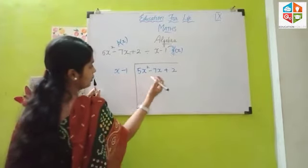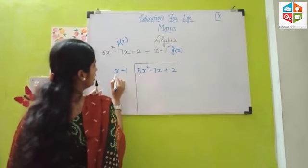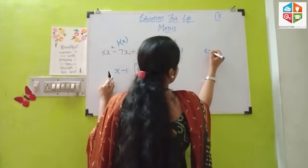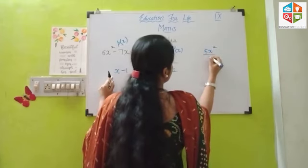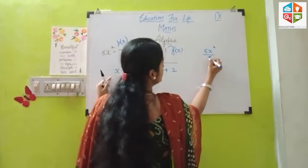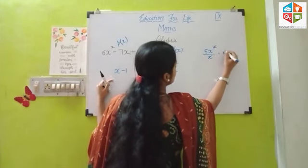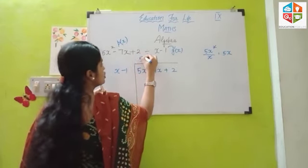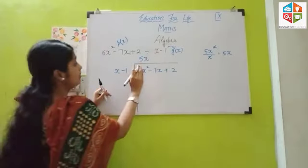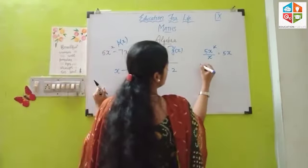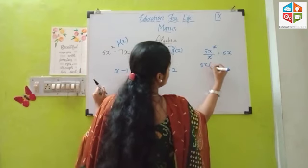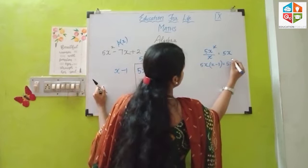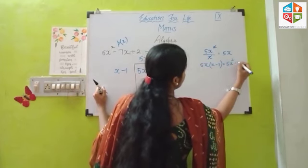Now let us divide. If you want to divide by the first term of the divisor, 5X squared divided by X. X and power get cancelled, so 5X will be. This is how we will multiply this 5X with X minus 1. 5X into X minus 1 equals 5X squared minus 5X.